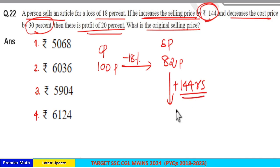So, this is plus Rs. 144. Don't add this plus Rs. 144 to this 82 part. That is wrong. Instead, here he decreases the cost price by 30%.